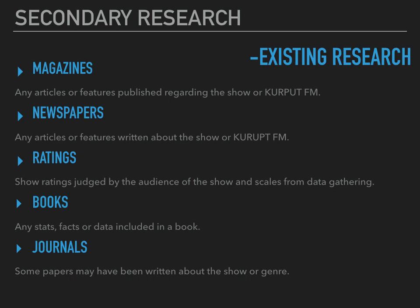Next, I'm going to talk about secondary research, which is existing research which has already been collected. You'll find that most of the time this data is less specified and more broad to the topic you want to focus on. So although it's useful, it wasn't formed purely for your investigation — it was formed for a wider reason, but you can still use it. Sources include magazines, any articles or featured published resources regarding the show or Corrupt FM, or maybe just the topic of grime music, as well as newspapers. Show ratings are judged by the audience and data gathering agencies. Also books with stats, facts, or data, and journals where papers may have been written about the show or the genre.